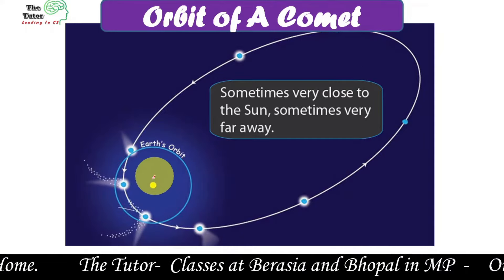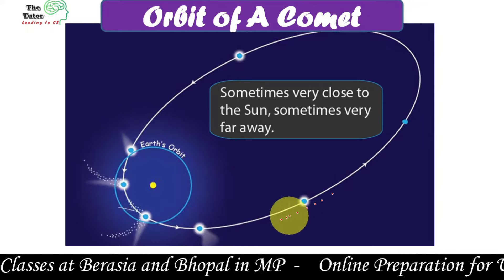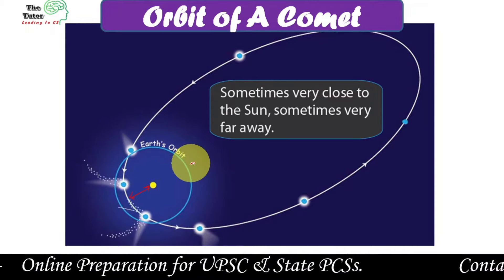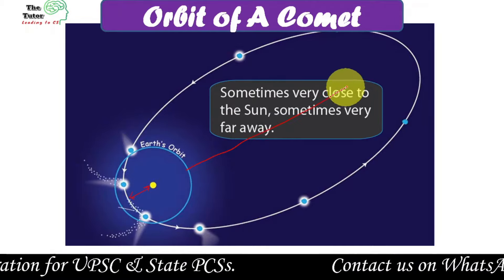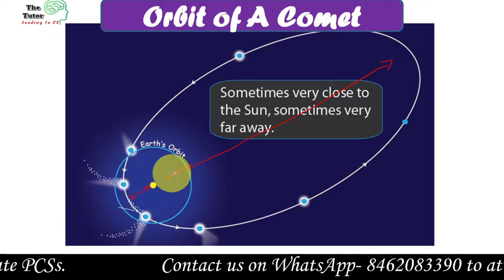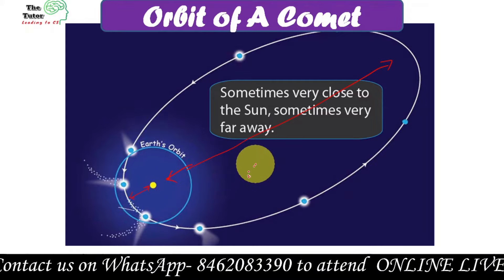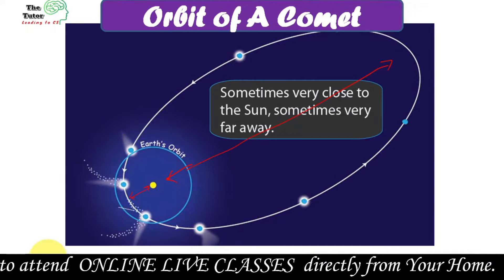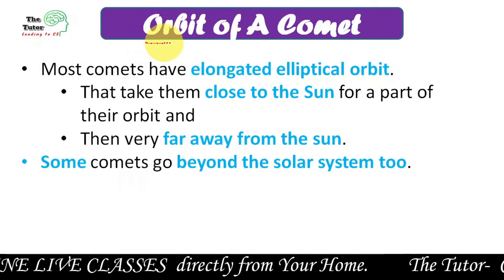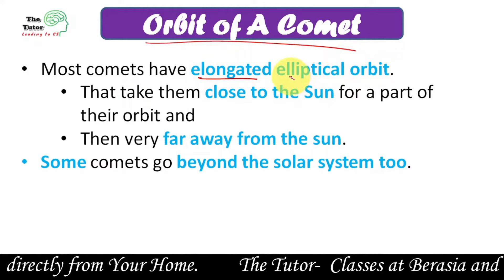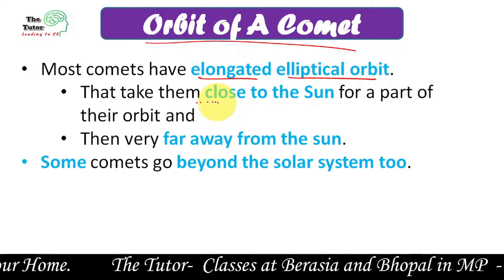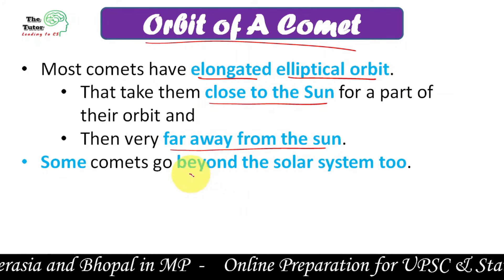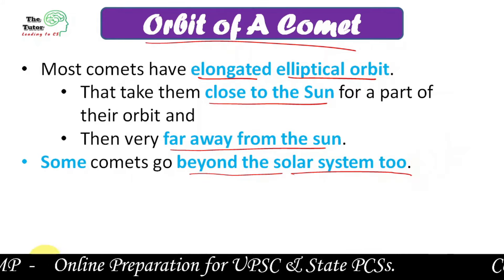The orbit of a comet is a very elongated elliptical path. There is a time when the comet comes very close to the sun and we can see it very clearly, and after many years it goes so far from the sun that the distance is huge and we cannot see it for hundreds of years. Some comets take more than 100 years. For example, Halley's Comet comes after 76 years — every 76 years. Some comets go beyond our solar system and after a long time come back inside.